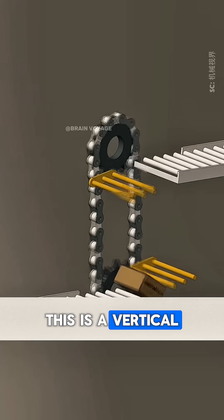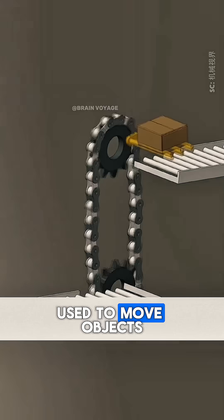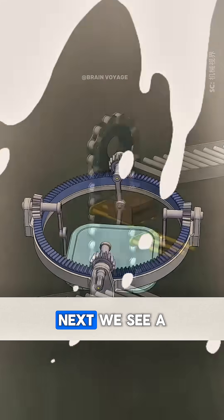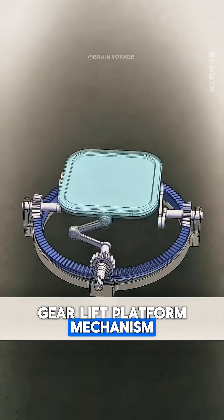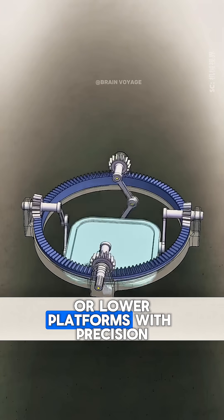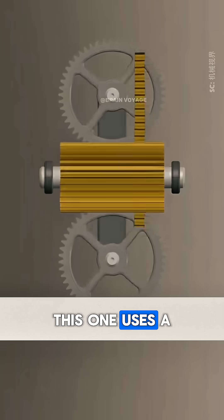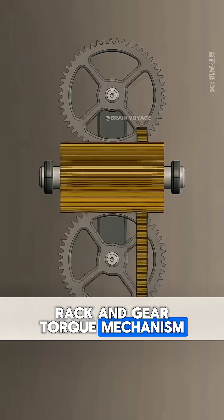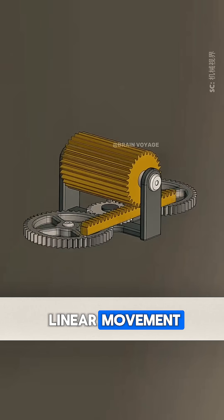This is a vertical transport mechanism, used to move objects up and down in a controlled manner. Next we see a gear lift platform mechanism, utilizing gears to raise or lower platforms with precision. This one uses a rack and gear torque mechanism, converting rotational motion into linear movement.